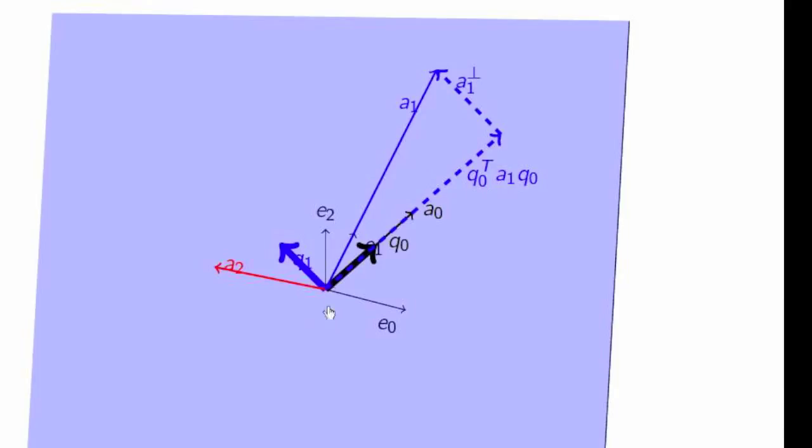Therefore, if you take A1, you subtract out the component in the direction of q0, you end up with a component that's perpendicular to q0, and that's the component of A1 perpendicular to q0. Now, if you take that vector and you simply move it so that it's rooted at the origin, then we have a vector that is perpendicular or orthogonal to q0.